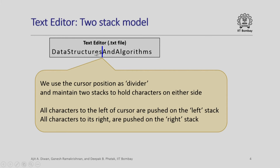We have this text 'data structure and algorithm'. Suppose we use the cursor position as some kind of a divider — so if this is dividing the text, I have characters to the left of it and characters to the right of it. I decide to maintain two stacks to hold characters on either side. All characters to the left of the cursor are pushed into the left stack; all characters to the right of the cursor are pushed into the right stack. So I now have two stacks: left stack and right stack.